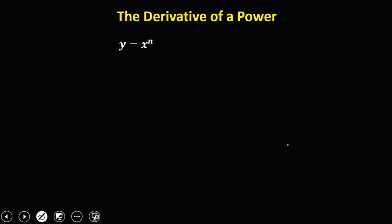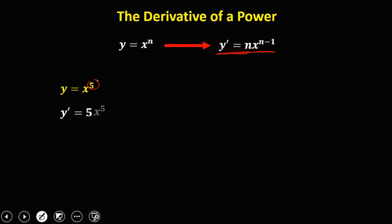For the derivative of a power, y equals x to the power n, the formula is: y prime equals n times x to the power n minus 1. Given y equals x to the power 5, using this formula, the 5 becomes the numerical coefficient, then minus 1 for the exponent, so that's x to the power 5 minus 1.